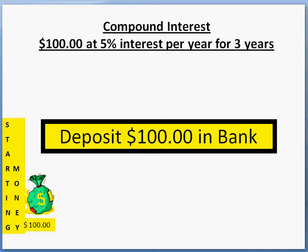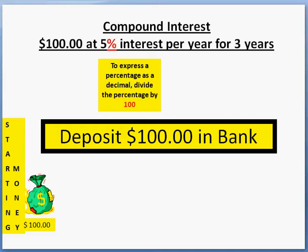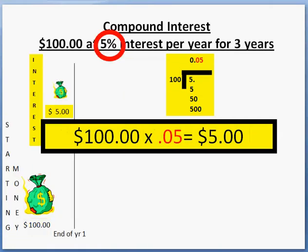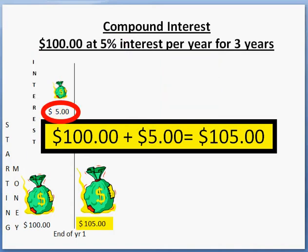We'll look at an example. First, remember that to express a percentage and be able to use it in a calculation, you have to express it as a decimal. To do that, we divide the percent by 100 — dividing 100 into 5%, we get a decimal of 0.05. So if we deposit $100 in the bank at 5% interest, we're going to multiply the $100 by 0.05.